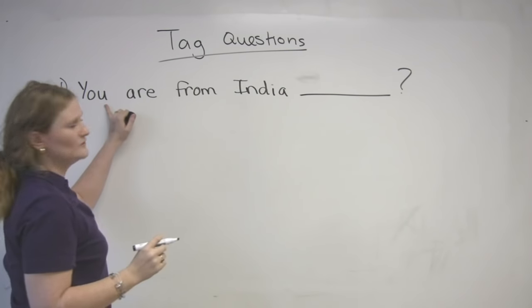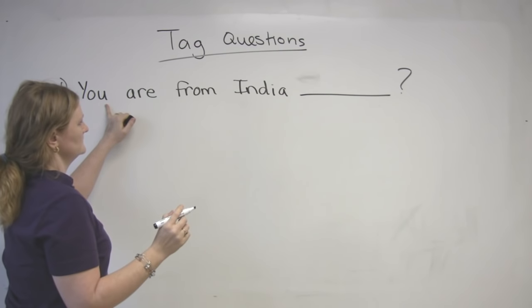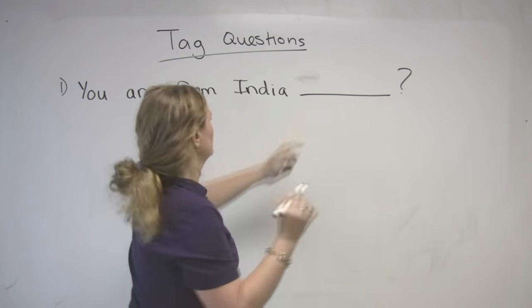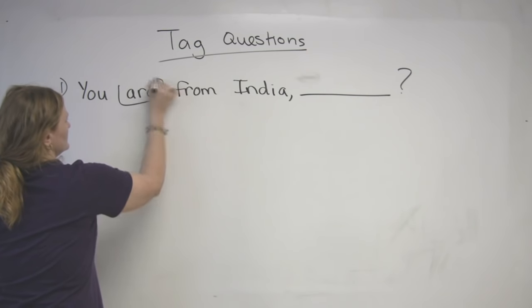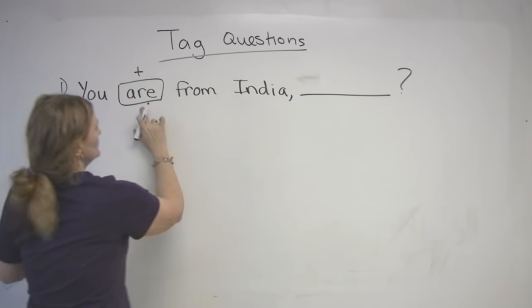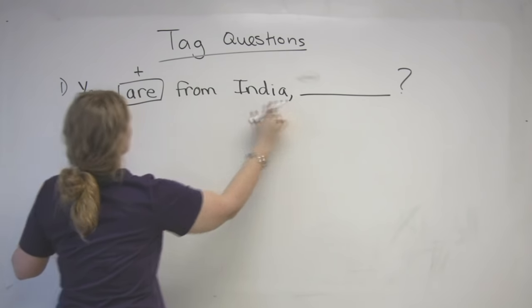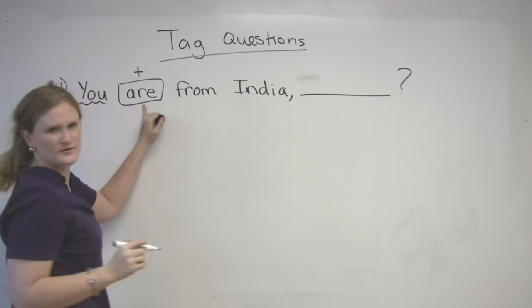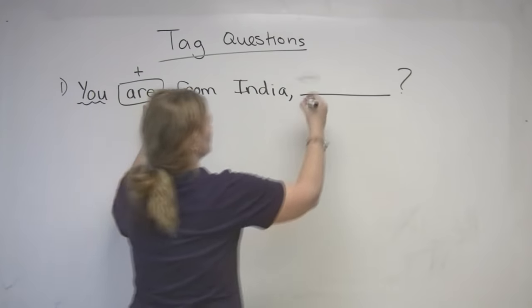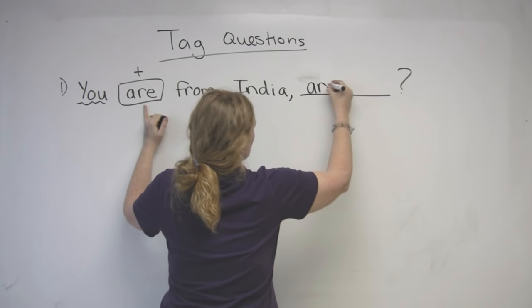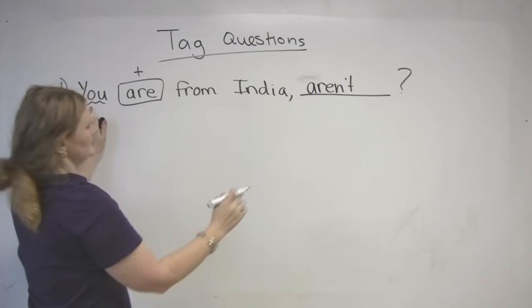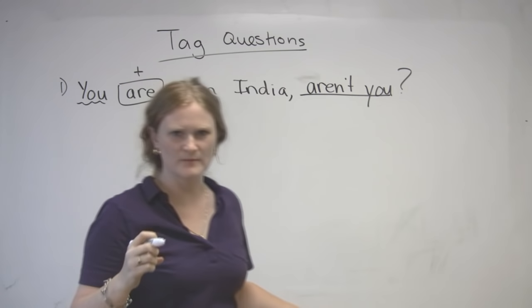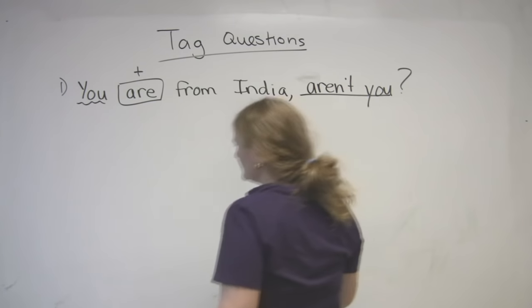You are from India. So what we need to do is try to fill in the tag question at the end. This is how you do it. If this is positive, we're just going to use the negative and the same subject, but we're going to switch the position. So what's the negative of 'are'? It's 'aren't'. And the beginning goes to the end. So you say to the person: 'You're from India, aren't you?'